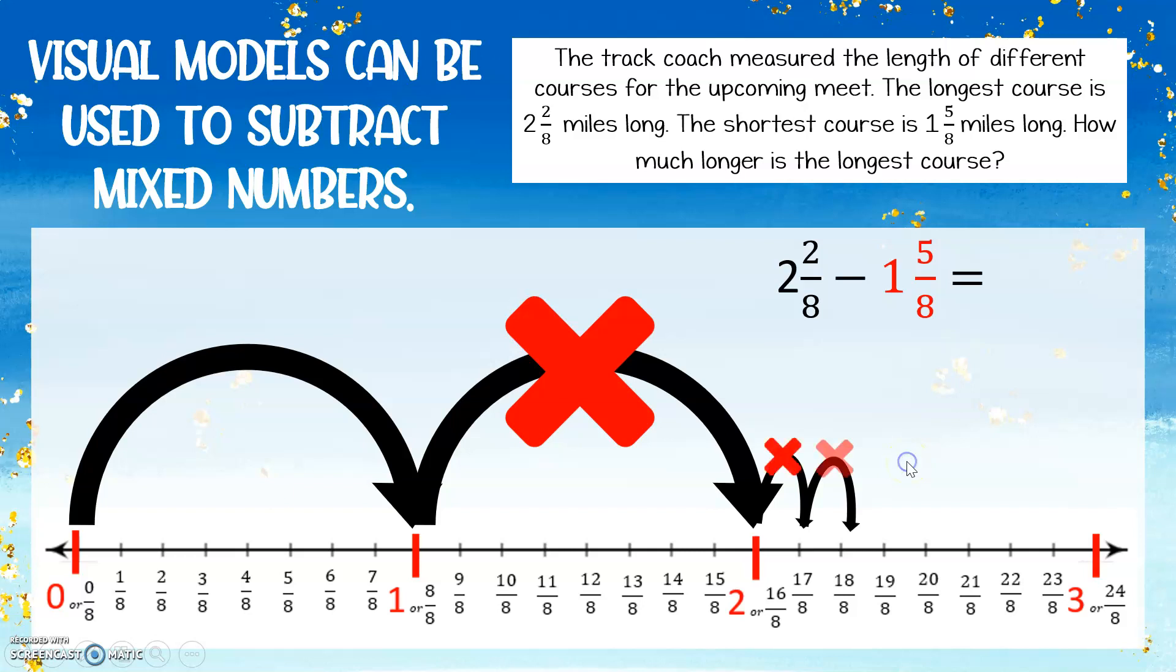1 eighth, 2 eighths. But there's no more small eighth jumps left. Well, we know that 1 whole is representative of 8 eighths. So we can add 1 eighth, 2 eighths, 3 eighths, 4 eighths, 5 eighths, 6 eighths, 7 eighths, 8 eighths.